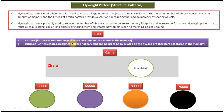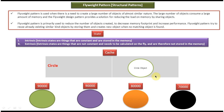Intrinsic states are things that are constant and are stored in the memory. Extrinsic states are things that are not constant and need to be calculated on the fly, and therefore are not stored in the memory. If you take this circle example, circle shape is constant — it is not changed. You can see that for green, blue, orange, and black color circles the shape is the same.